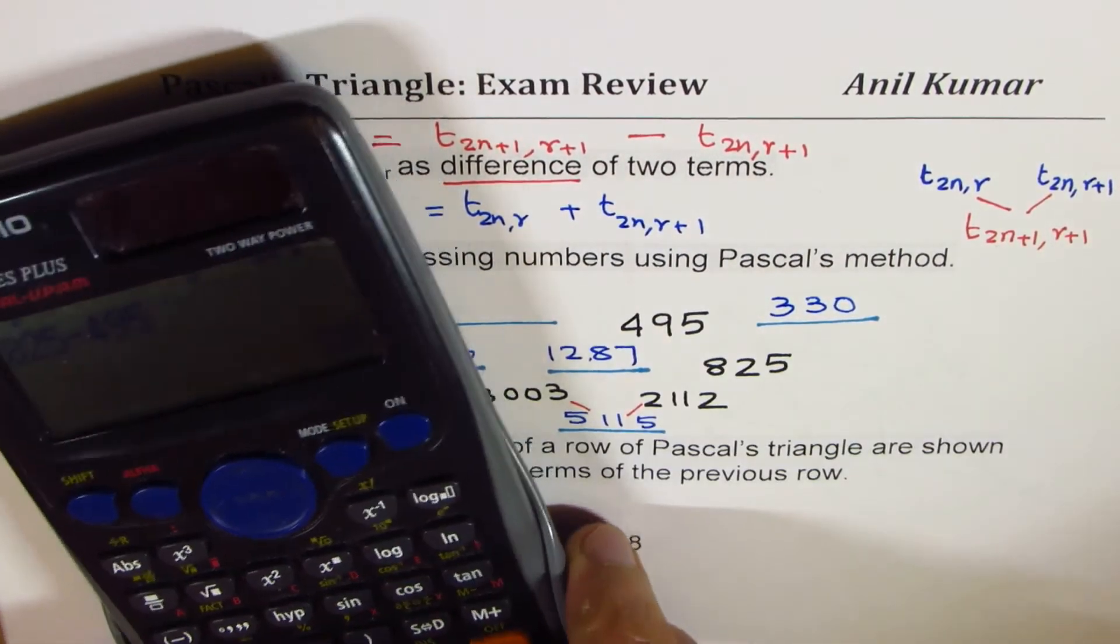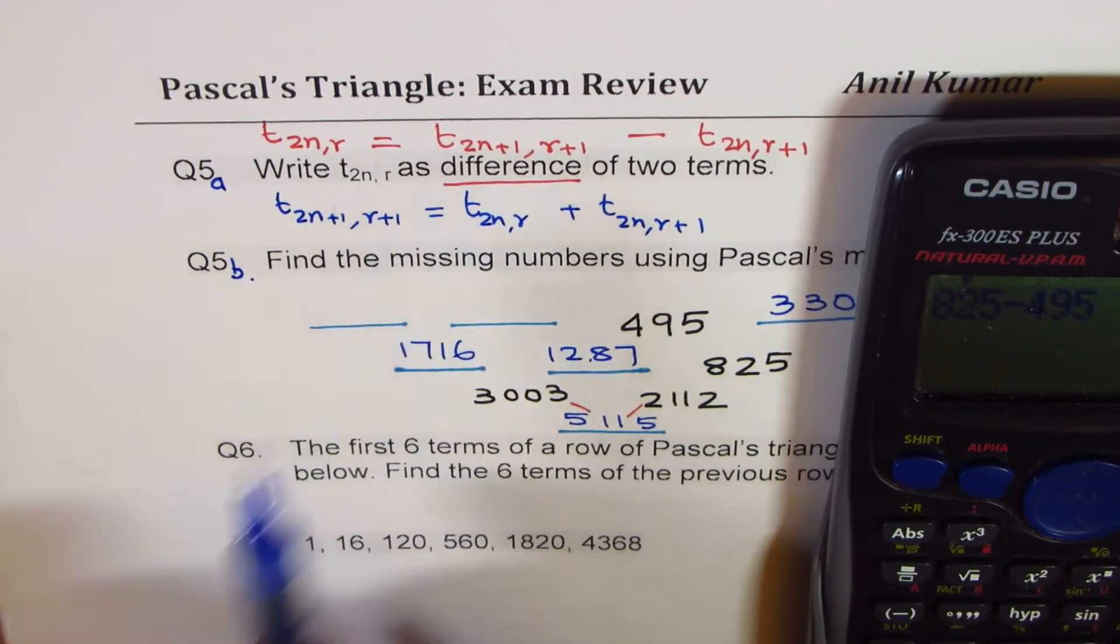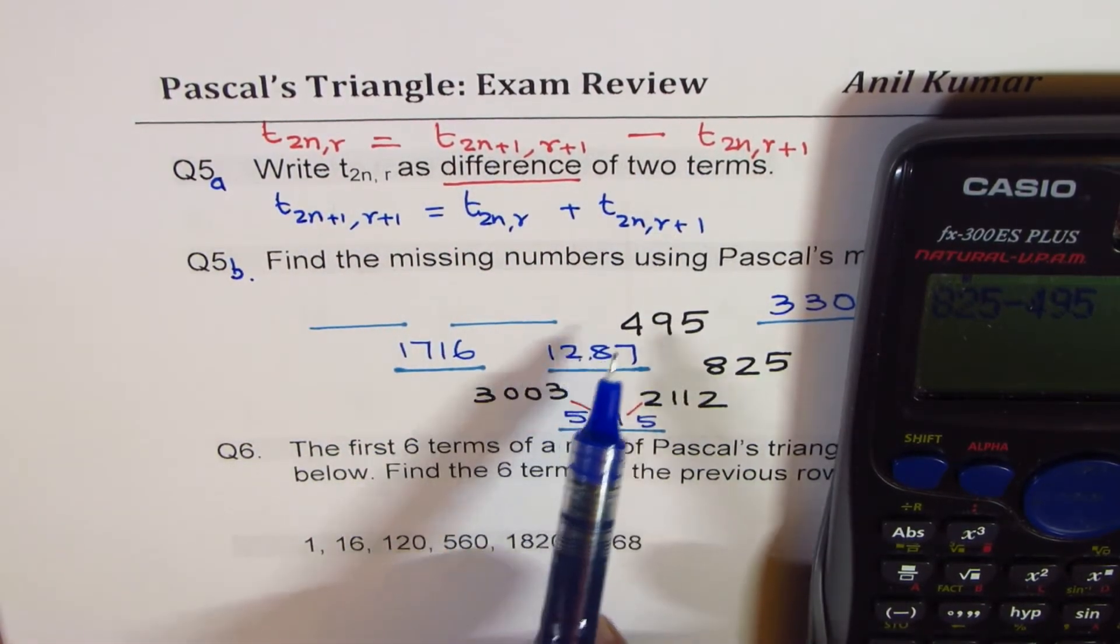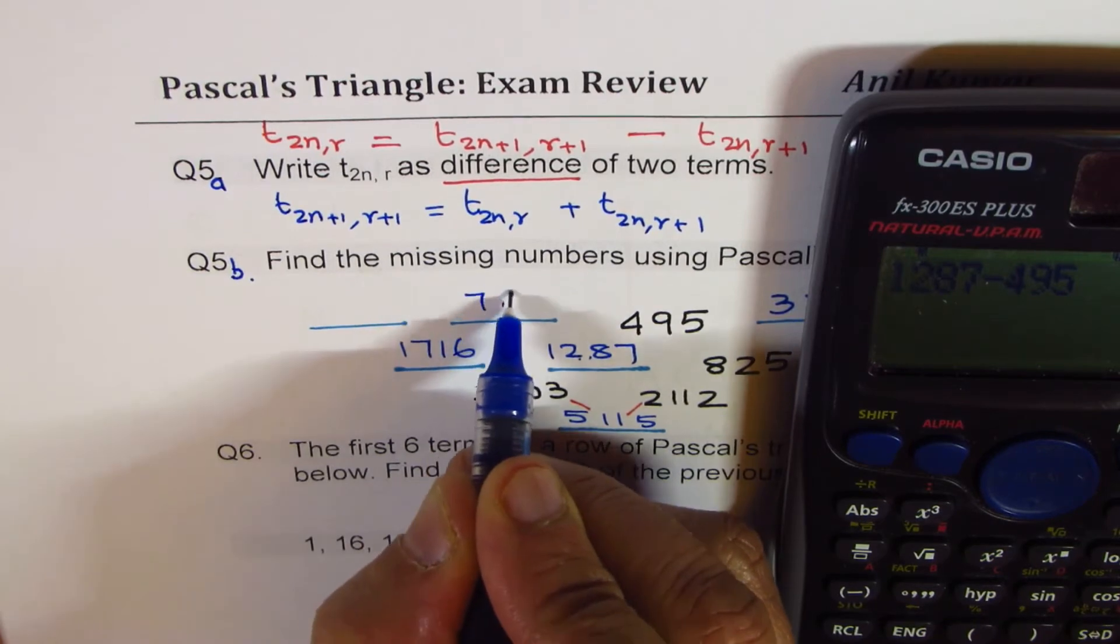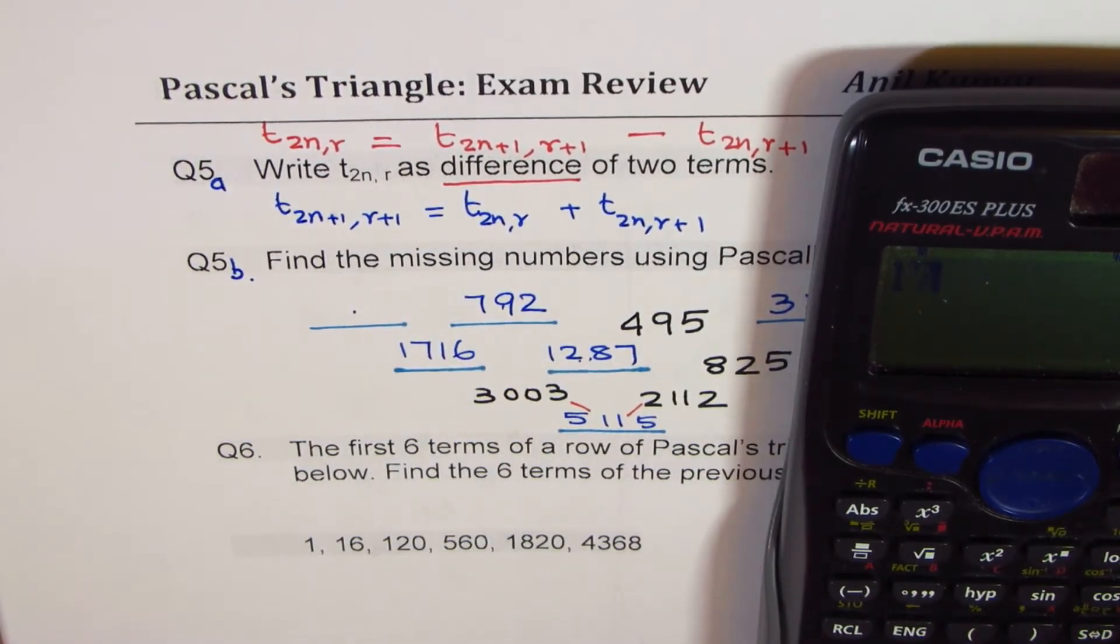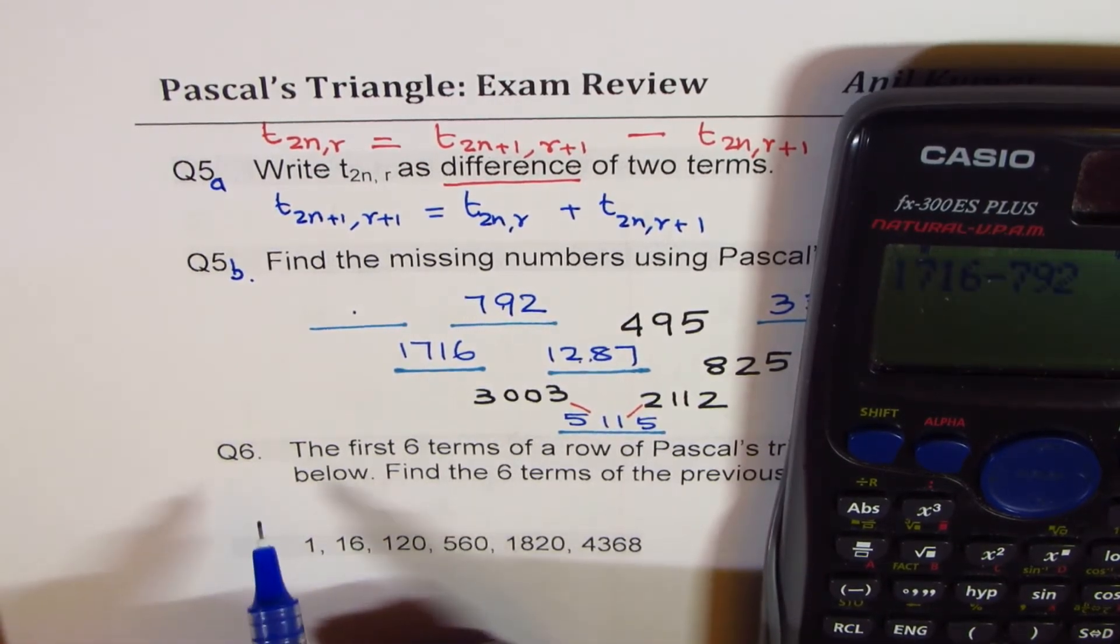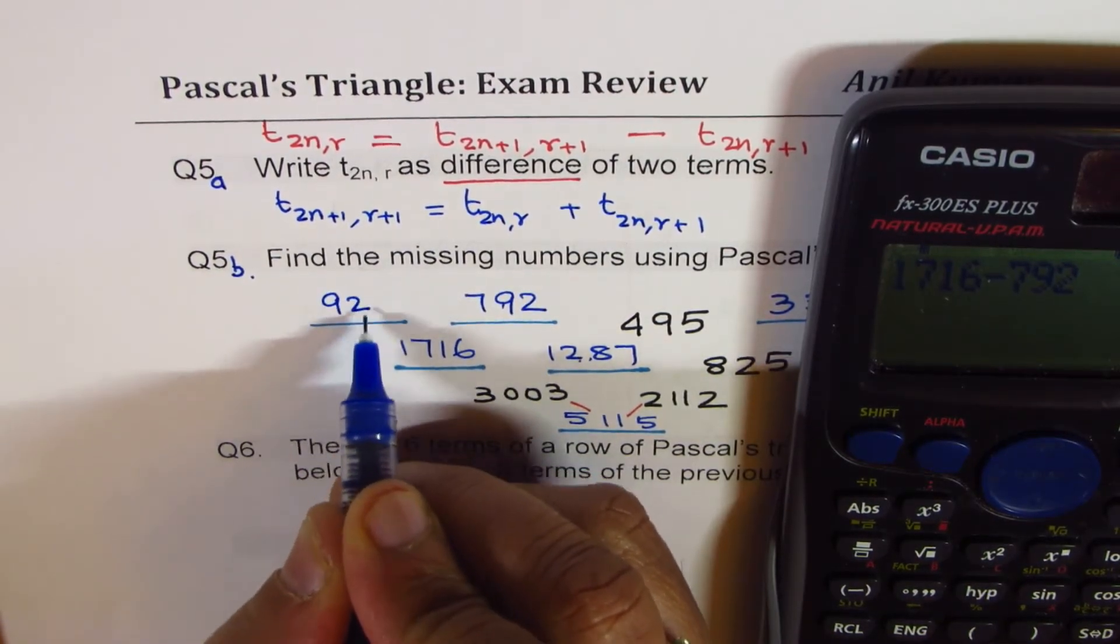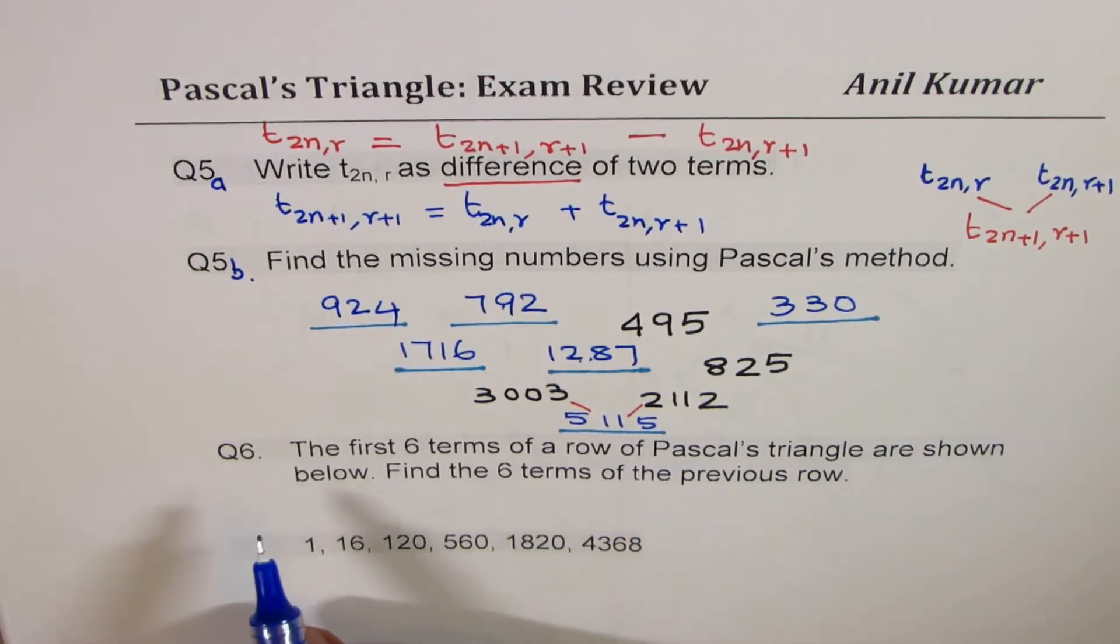And now we can move left. So now we'll have 3003 take away 1287. That gives us 1716. So now let's find this number, which will be 825 take away 495, which is equal to 330. See, we are using this difference formula, getting back our numbers, which were in the previous rows. Now here again, we'll use this difference formula. 1287 take away 495 equals to 792. And now we can find this number 1716 take away 792 equals to 924. So that is how you could actually solve this question.